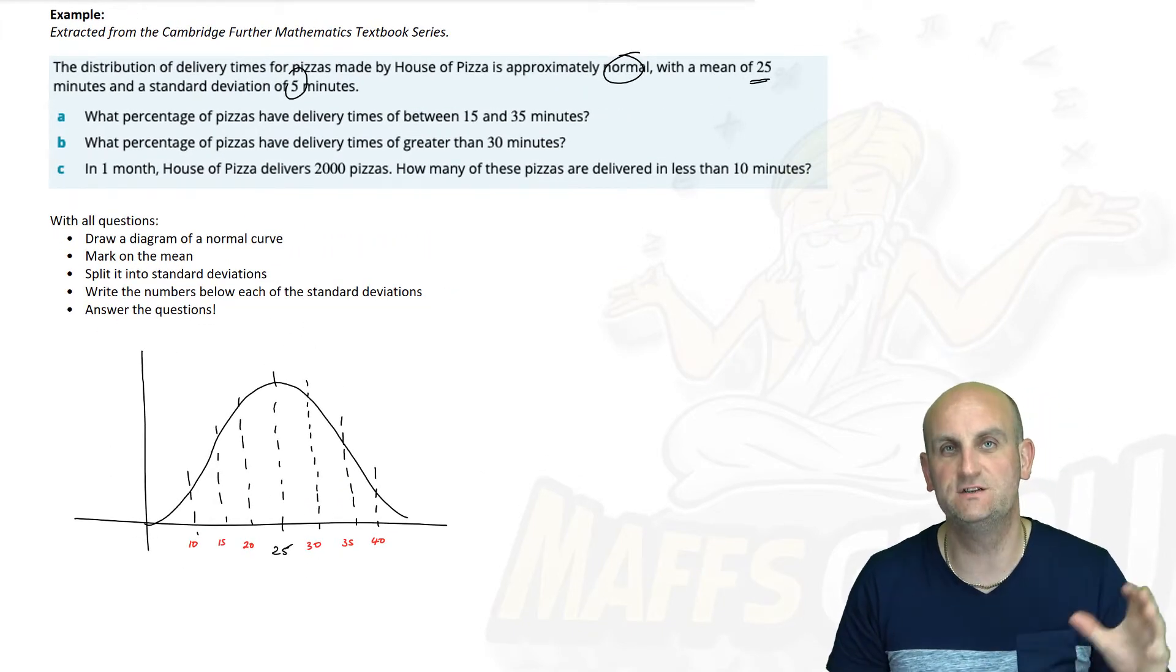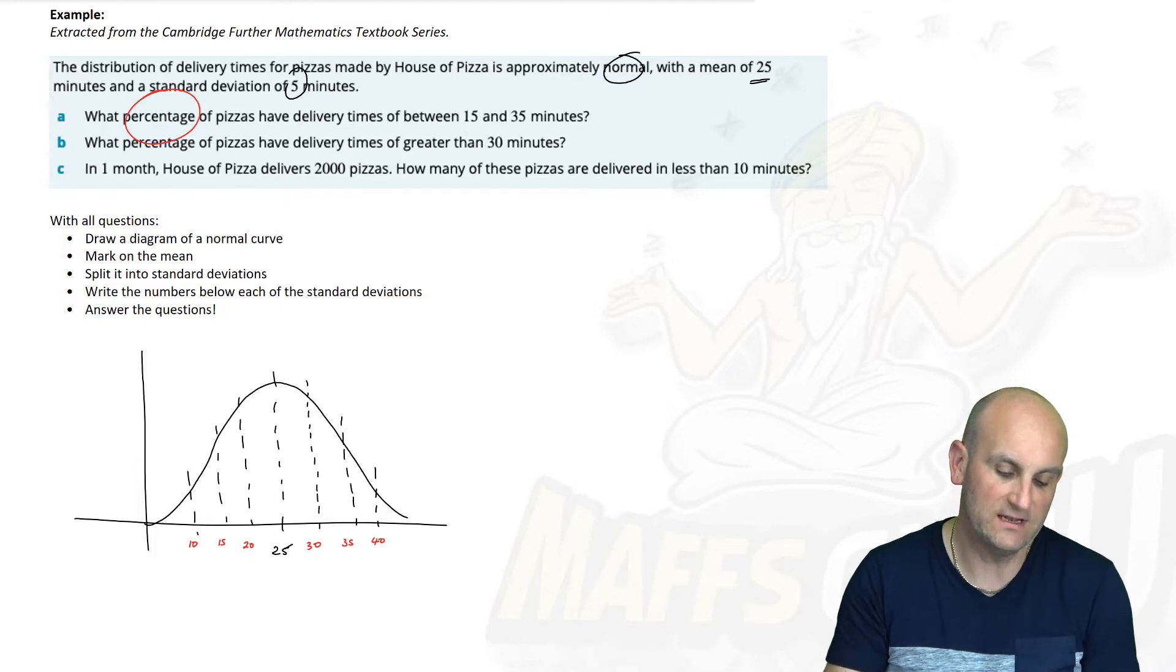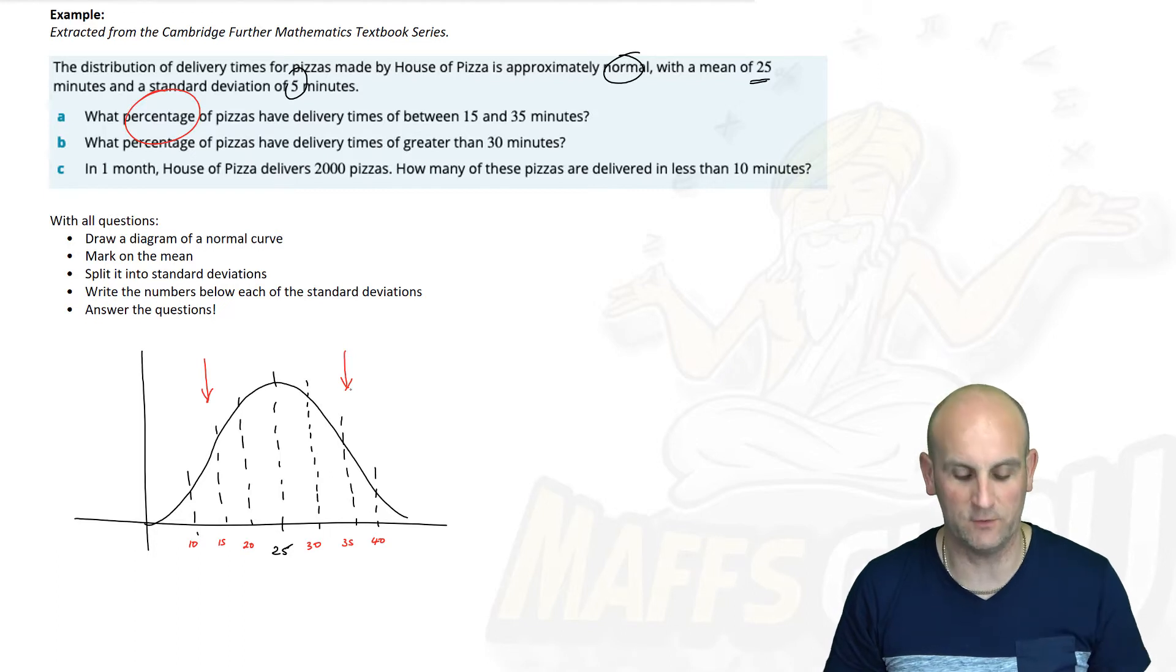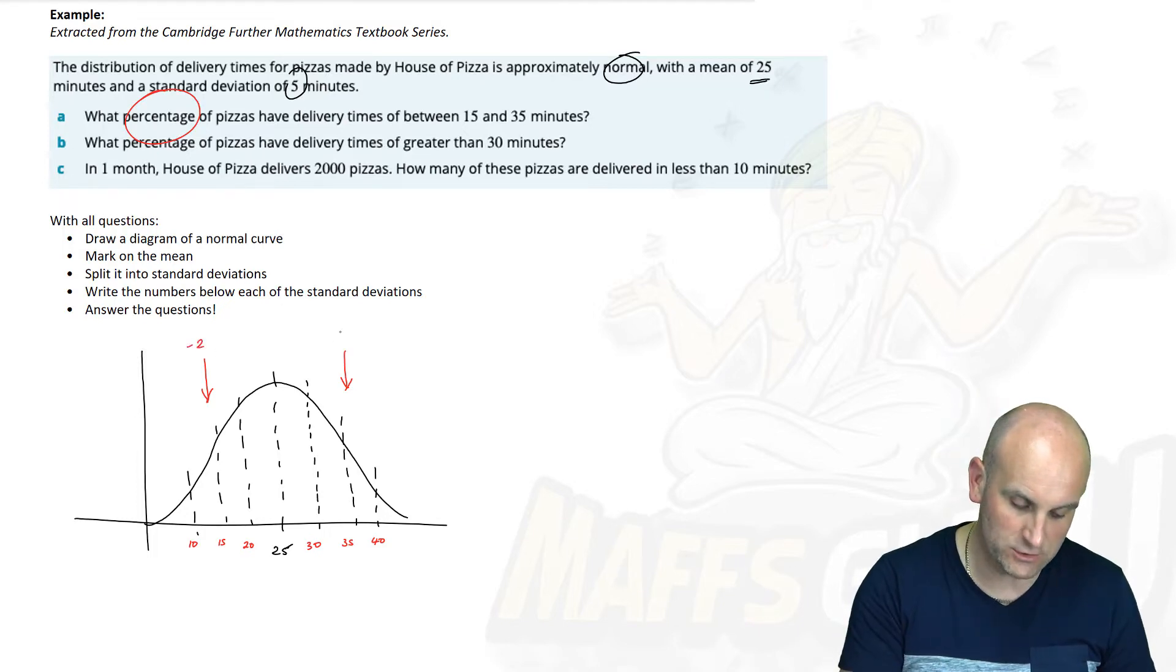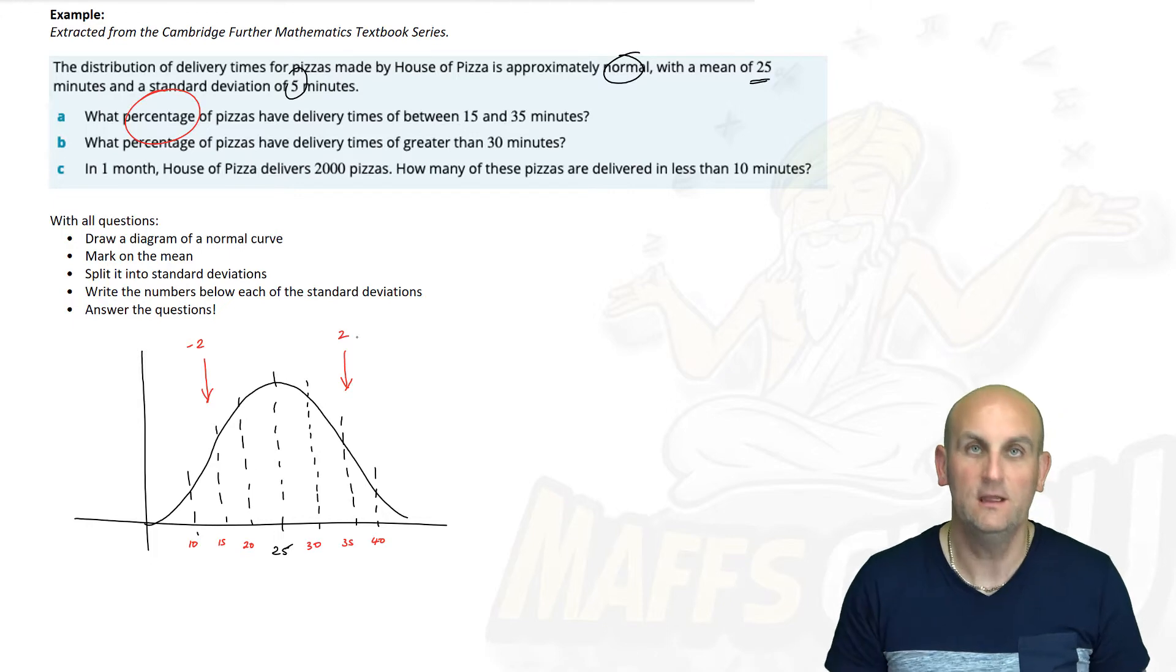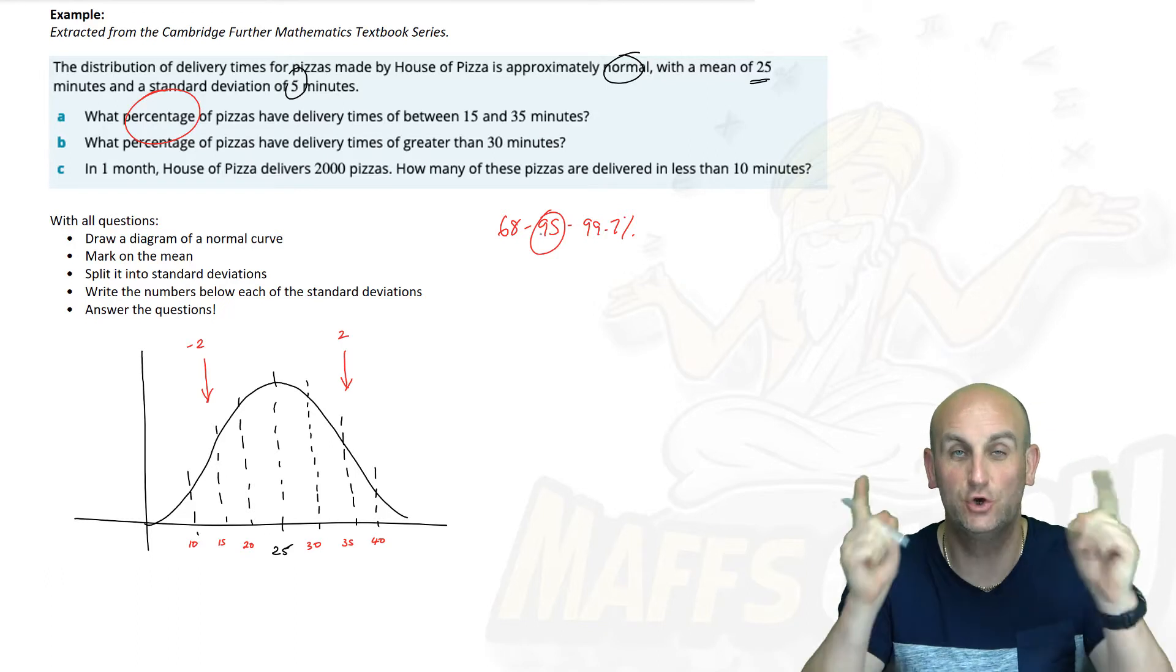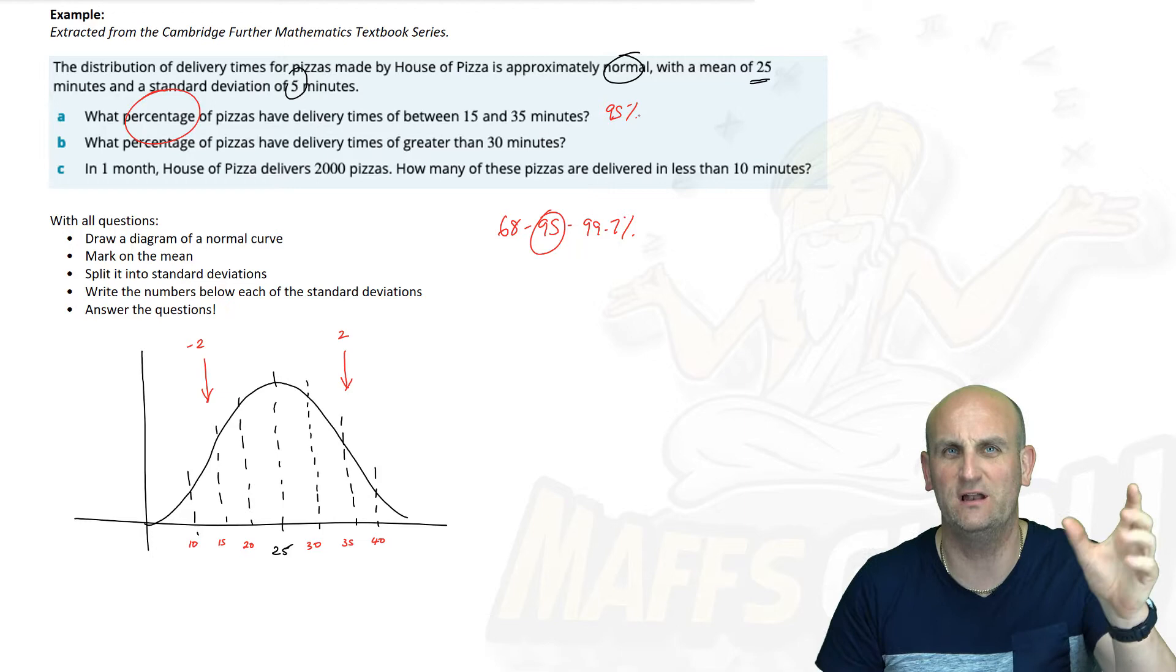The question says, what percentage of pizzas have delivery times of between 15 and 35 minutes? Here is 15 and here is 35. Between what standard deviations is this? It seems to be between minus two and two. Because I've got between minus two and two, the 68-95-99.7% rule tells me that between two standard deviations is 95%.